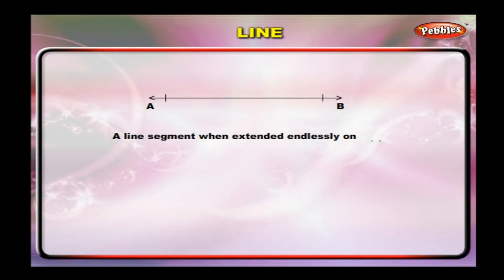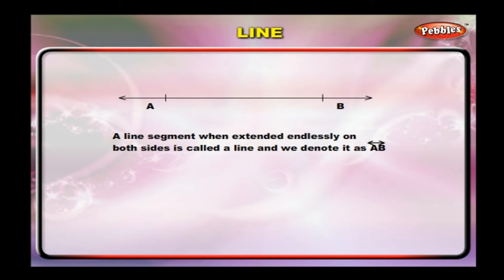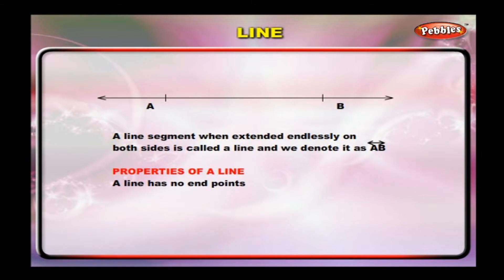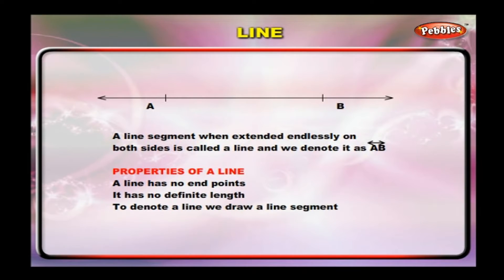A line segment, when extended endlessly on both sides, is called a line and we denote it as AB. Properties of a line: a line has no end points and has no definite length. To denote a line, we draw a line segment and draw arrows at both the ends.